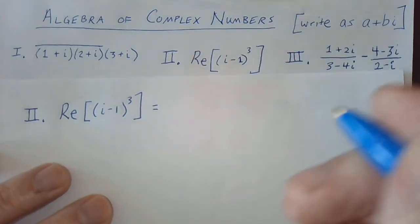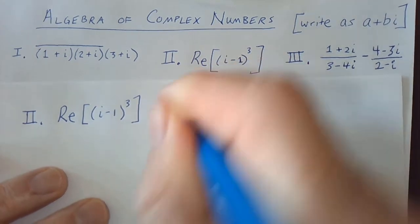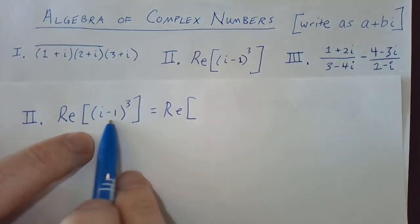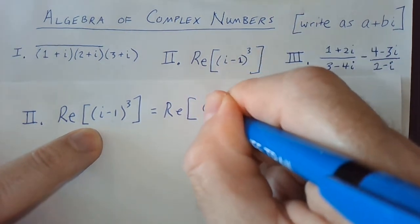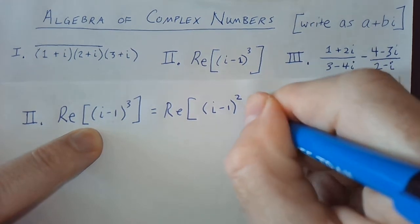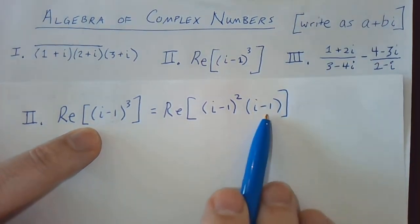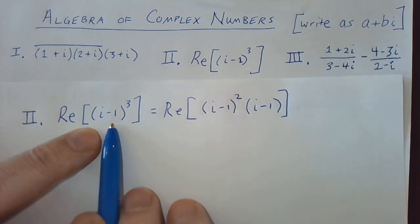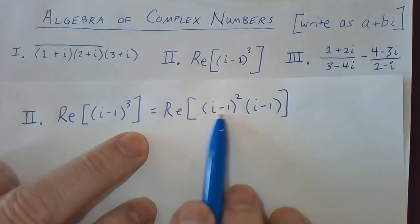This is equal to the real part of—well, I need to multiply this by itself three times. So what I'm going to do is i minus 1 squared, and then i minus 1. So i minus 1 cubed is i minus 1 squared times i minus 1. Let's do this product first.